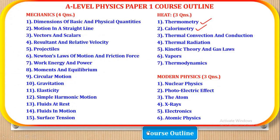Now before we go to the questions, the course outline for the entire Physics Paper 1 is: sub-mechanics with 15 topics, Heat with 7 topics, and Modern Physics with 6 topics. We have begun with Heat, and these two topics will be covered in this Topical Test.